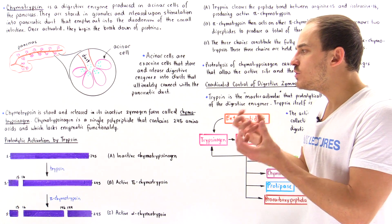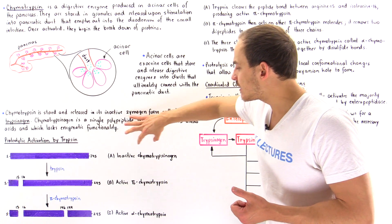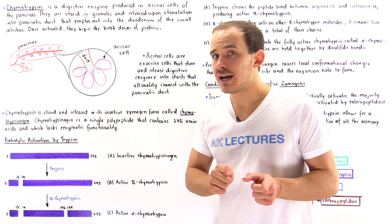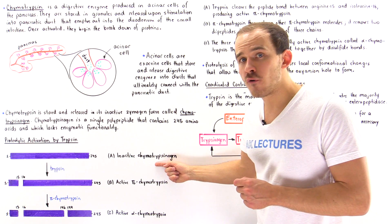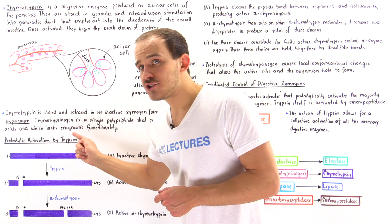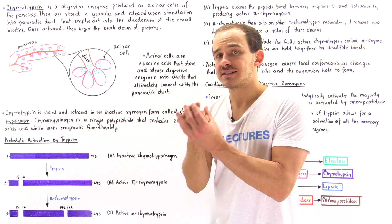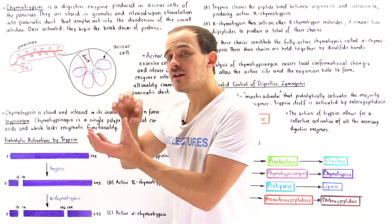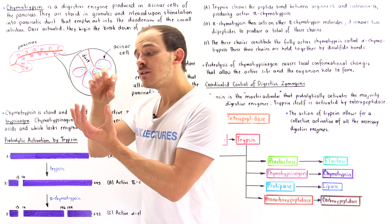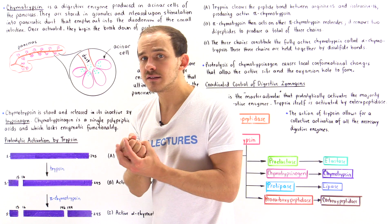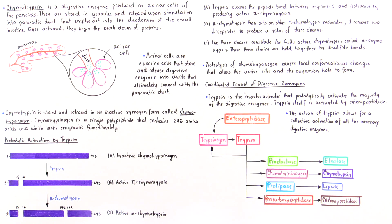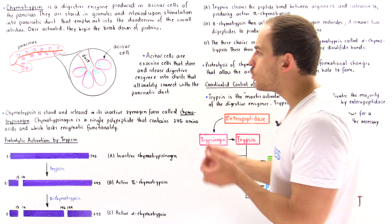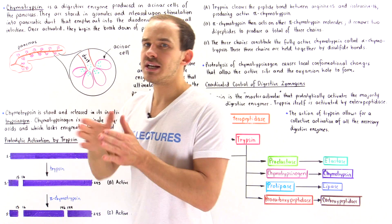What distinguishes active alpha-chymotrypsin from inactive chymotrypsinogen? The active site and the oxyanion hole are not correctly formed in the zymogen. Proteolytic cleavage allows a localized conformational change to take place, which creates the proper conformation of the active site and forms the oxyanion hole needed to stabilize the tetrahedral intermediate in the proteolytic reaction.